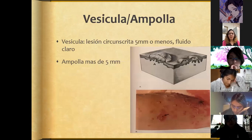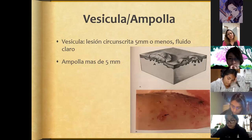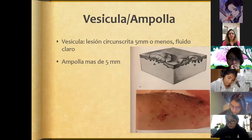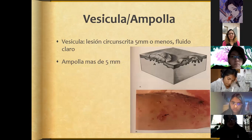A vesicle or bulla is a circumscribed lesion of less than 5 millimeters that can have clear content — it is very important to differentiate it from pustules. A vesicle always refers to clear fluid. When it measures more than 5 millimeters, we refer to it as a bulla. Vesicles are small lesions and bullae are larger. Bullae can also be described by their content: whether under tension, flaccid, crystalline, or cloudy.